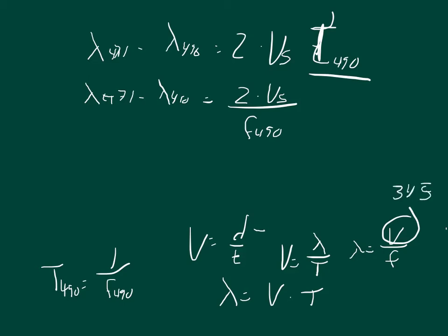And then it gives us the frequency, we have one at 490 and one at 471. So we can plug in the 490 here. So 345 over 490 is the wavelength at 490.